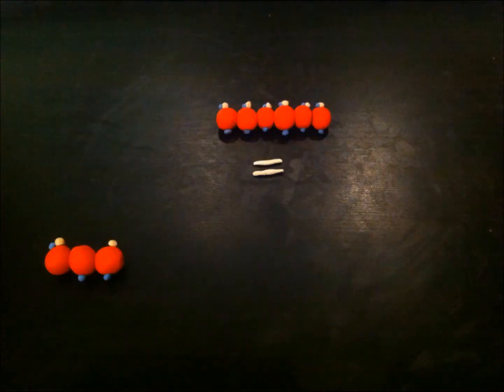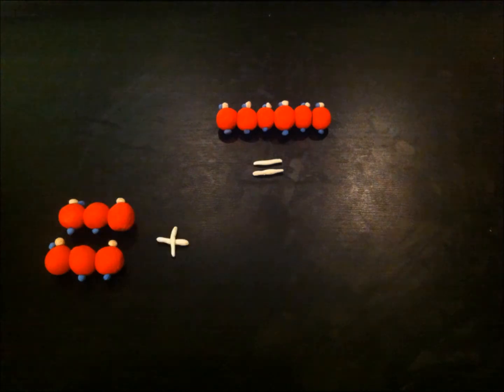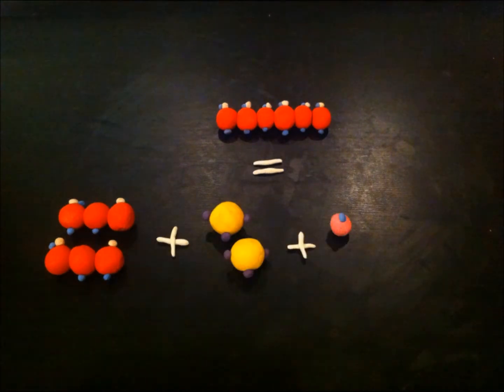Summary equation: glucose produces two pyruvate molecules plus a yield of 2 ATP plus 2 NADH plus two water molecules.